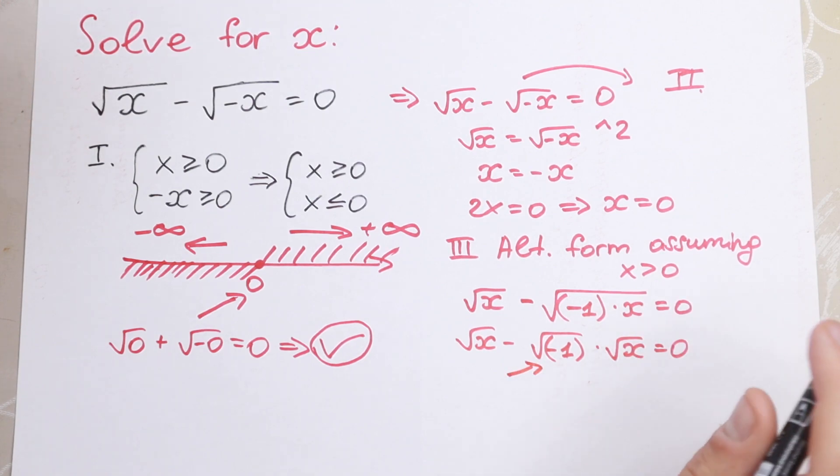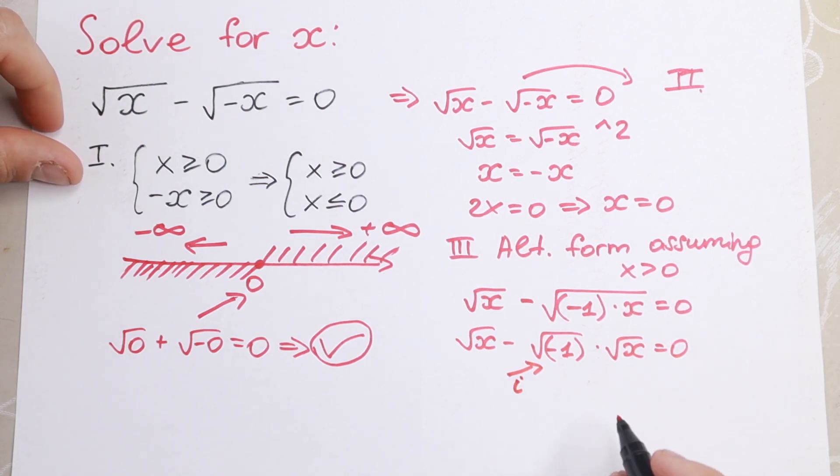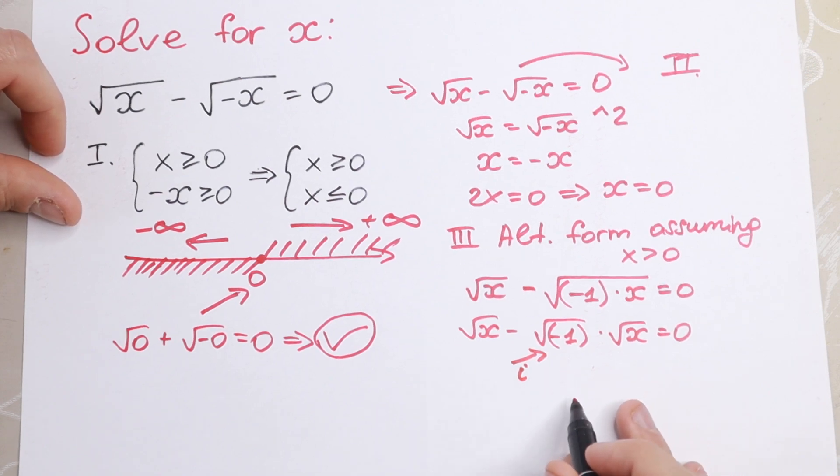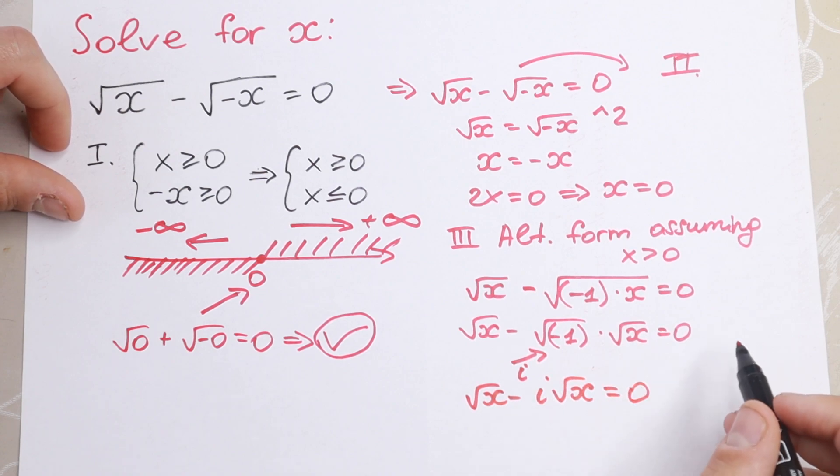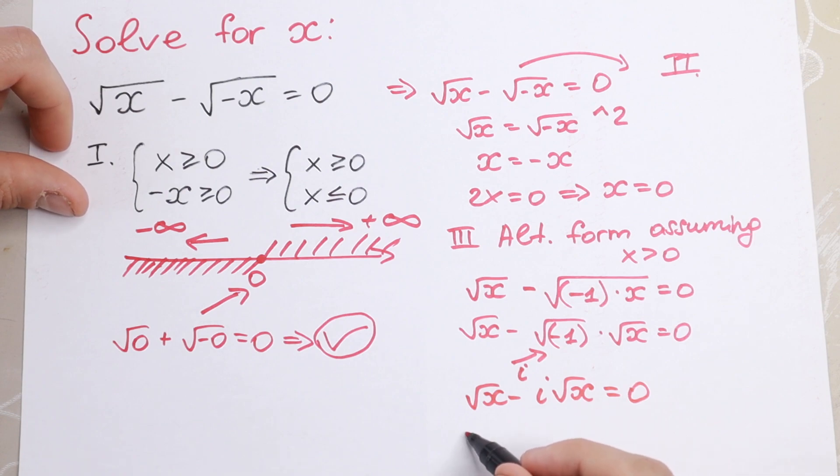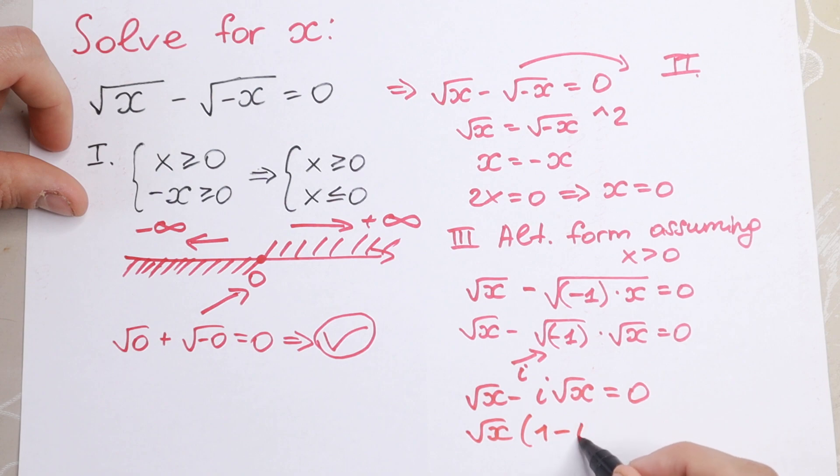So we will have our alternative form, assuming that x is positive. So square root of x minus i square root of x equal to 0. If we can factor it out, so square root of x and in parentheses 1 minus i equal to 0. So this is our complex, if we are talking about complex numbers.